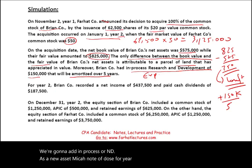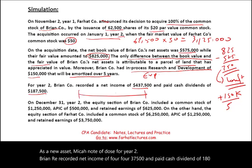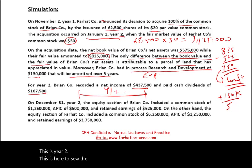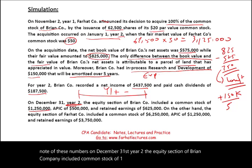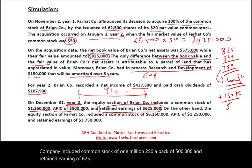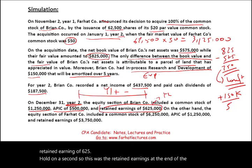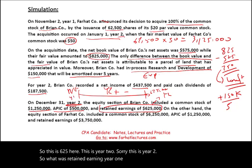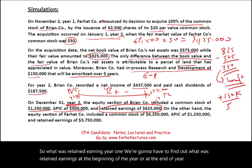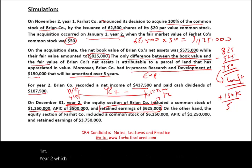For Year 2, Brian recorded net income of $437,500 and paid cash dividends of $187,500. On December 31st Year 2, the equity section of Brian Company included common stock of $1,250,000, additional paid-in capital of $500,000, and retained earnings of $625,000. We need to work backward to find retained earnings at the beginning of Year 2 — the acquisition date.